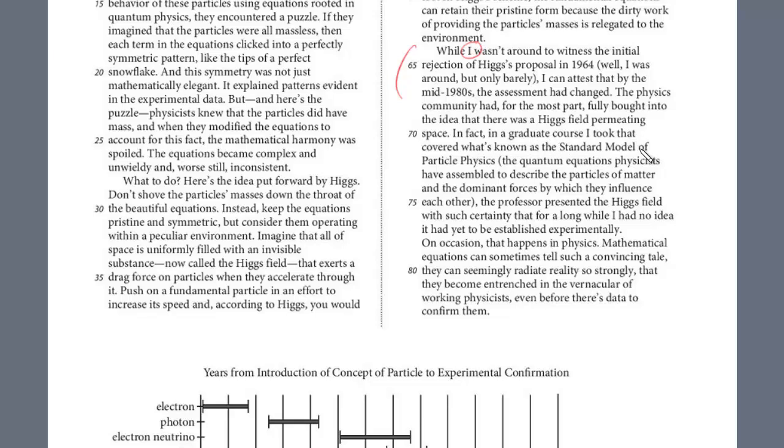I can attest that by the mid-1980s, the assessment had changed. The physics community had, for the most part, fully bought into the idea that there was Higgs field permitting space. And so he's giving sort of a personal anecdote, right? I personally wasn't around, but by the 80s, I can attest that it had been accepted. In fact, in graduate school, I took that, covered what's known as the standard model of particle physics.